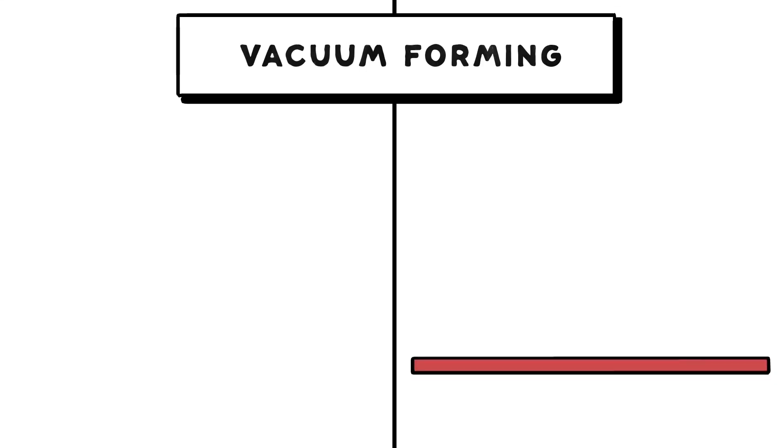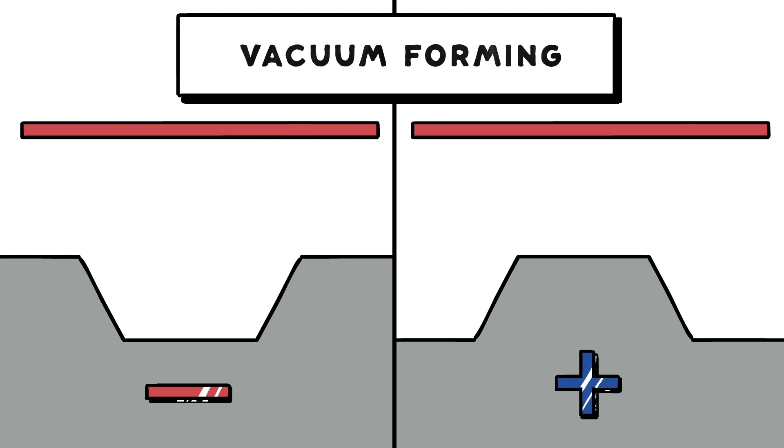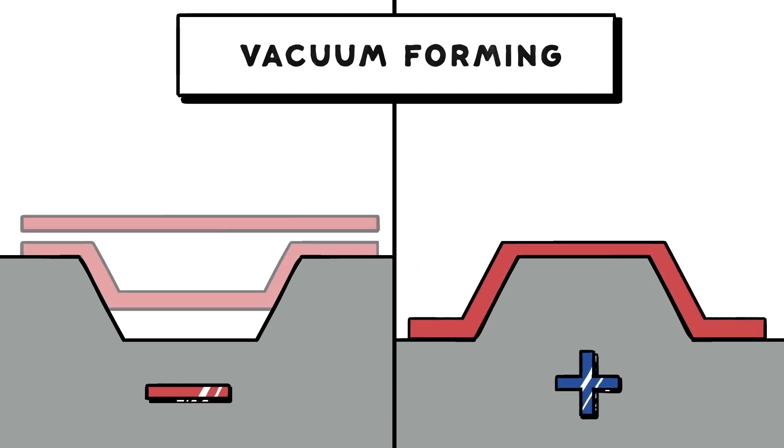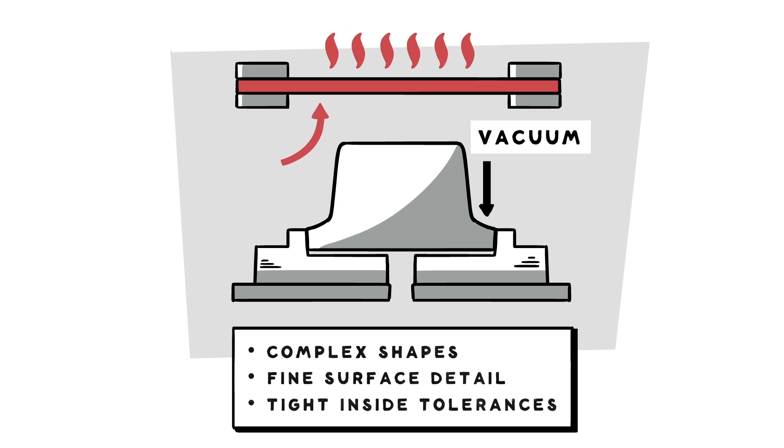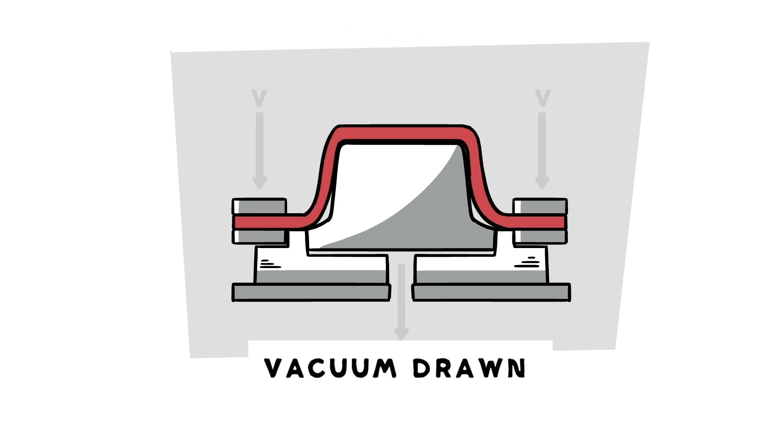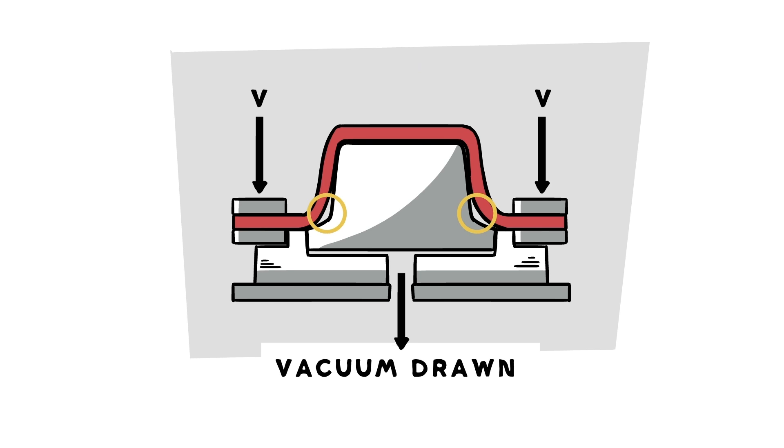In the vacuum forming process, a thermoplastic sheet is heated and pulled against a positive or negative mold. The vacuum between the mold and the sheet conforms the sheet to the mold, providing fine details and tight inside tolerances with minimal spacing.